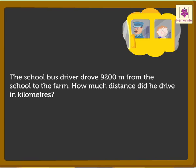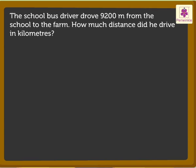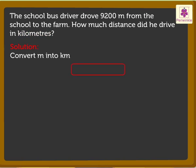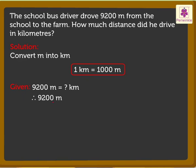Here we have to find the answer in kilometers, so we need to convert the meters into kilometers. We already know that one kilometer is equal to one thousand meters. Here we have to convert nine thousand two hundred meters into kilometers.